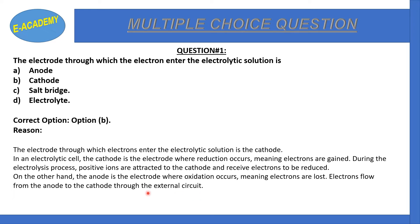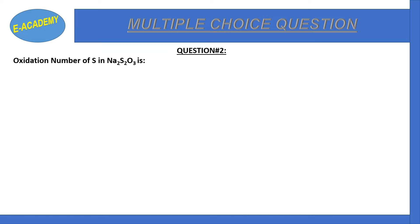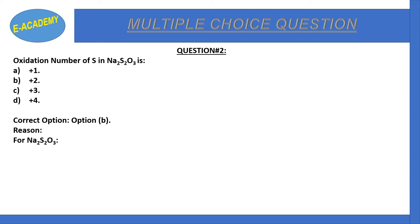Question number 2: The oxidation number of S in Na2SO3 is +1, +2, +3, or +4? To solve: Na is +1, so 2×(+1) + x + 3×(−2) = 0. Solving for x gives x = +2. So the correct option is B: +2.